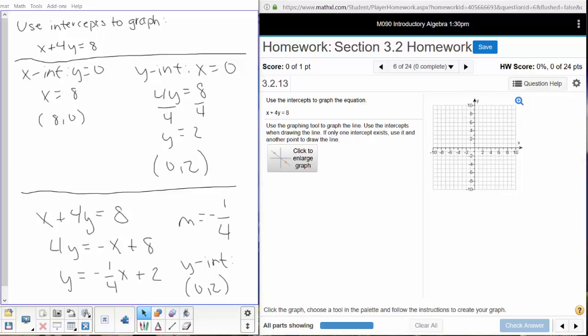Students kind of automatically jump to the method they're most comfortable with for graphing, but MyMathLab is very picky. If it tells you to use the intercepts, when you go to plot that line, the two points you use need to be the intercepts, or it will be marked wrong.